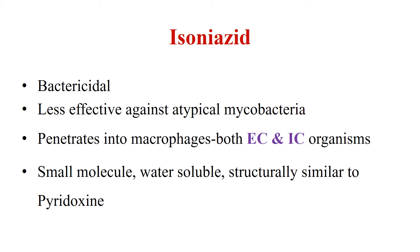Coming to isoniazid, it is a first-line anti-TB drug. It is primarily a tuberculocidal agent with high activity against Mycobacterium tuberculosis but is less effective against atypical mycobacteria. This agent penetrates into macrophages, so it is effective against intracellular organisms, and also active against extracellular organisms. It is a small molecule, water-soluble, and has structural similarity with pyridoxine.